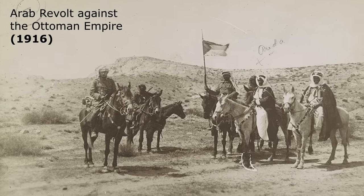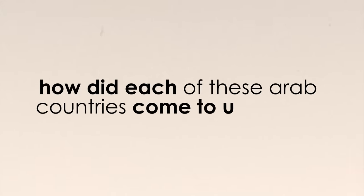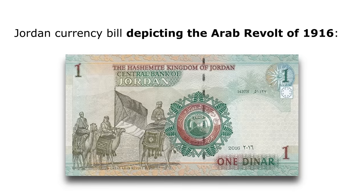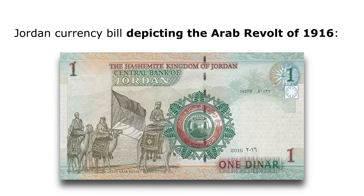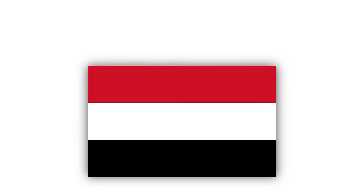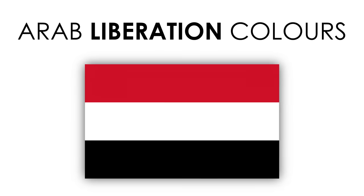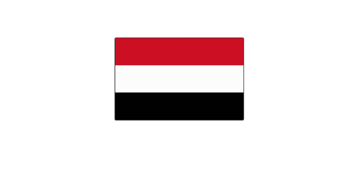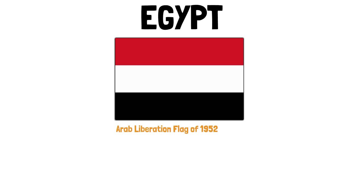Now that we understand where the colors come from and how they were first joined into a single flag, let's find out how each country that uses them today came to use them. Despite the whole Middle East not getting their desired independence after revolting against the Ottomans in 1916, it would soon come. In the 1950s, a subset of the pan-Arab colors — the Arab Liberation colors — came to prominence. These consist of a tricolor of red, white, and black. Green was given less prominence initially, but remained included in many flags, if only in the central symbol. This Arab Liberation flag was mainly inspired by the Egyptian Revolution of 1952.